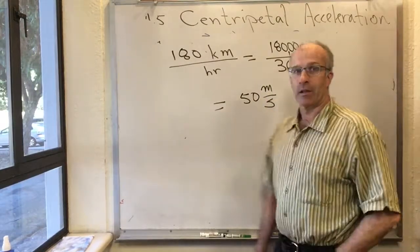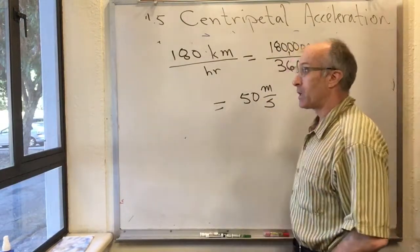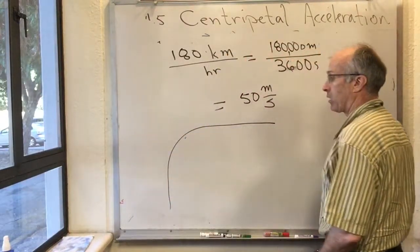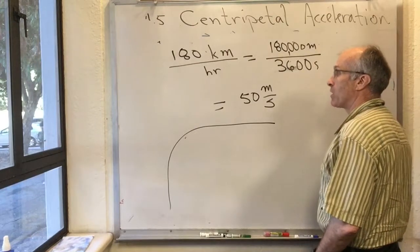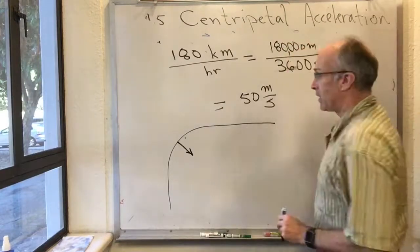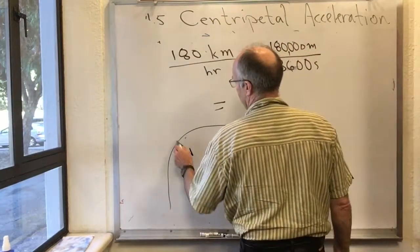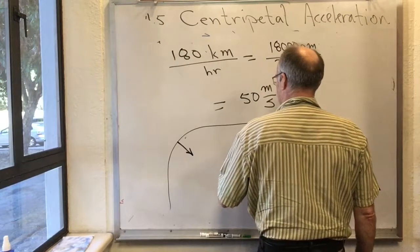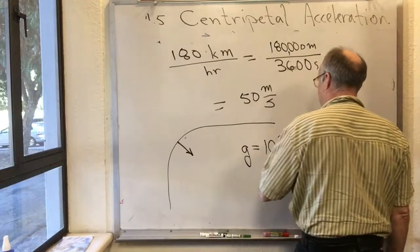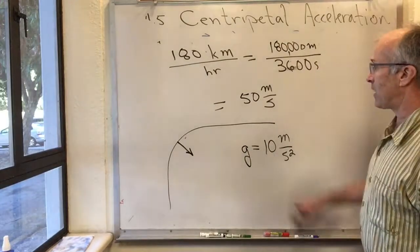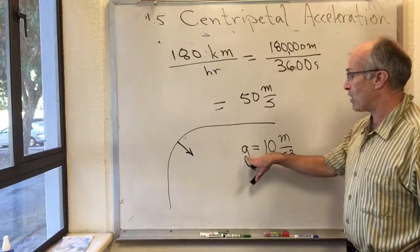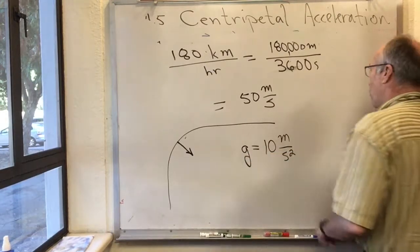Now, here's my little question for you. How sharp a corner can a car go around if it can withstand 1g of centripetal acceleration towards the center? And just to make our lives easy, let's take g to equal a nice round 10 meters per second squared. So the question is, at this speed, what radius of corner results in 1g of acceleration?